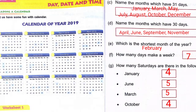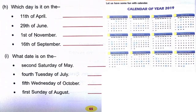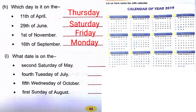Write down the question answers properly. (h) Which day falls on the given dates? According to the calendar: 11th April is a Thursday, and 29th June is a Saturday.